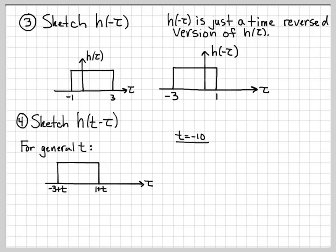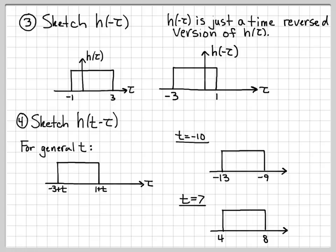To be specific, let's evaluate for special cases. If t equals minus 10, the leftmost point is minus 3 minus 10 equals minus 13, and the rightmost point is 1 minus 10 equals minus 9. If t equals 7, the leftmost point is minus 3 plus 7 equals 4, and the rightmost point is 1 plus 7 equals 8. The key is to be able to sketch h(t minus τ) for a general value of t — that's usually the part people struggle with most.